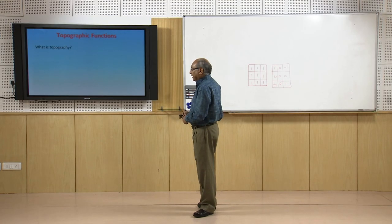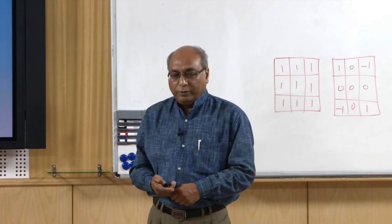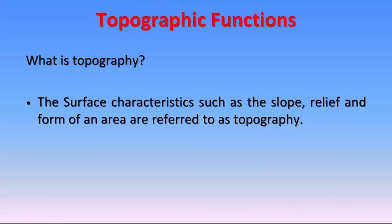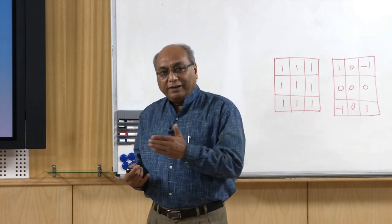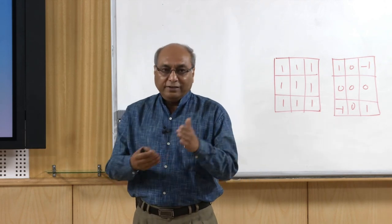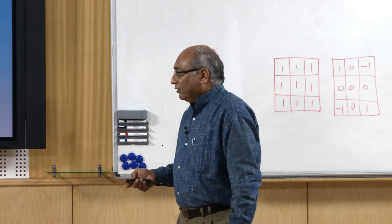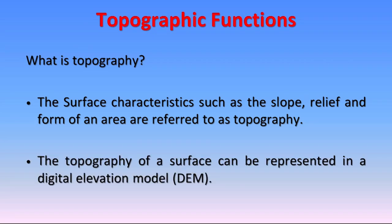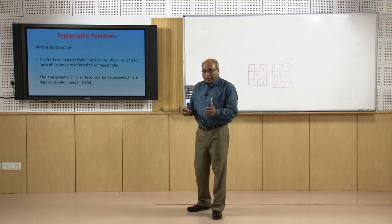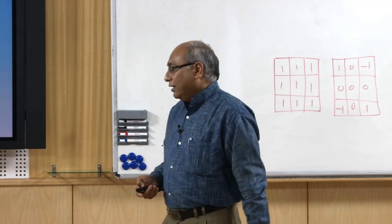Now, topographic functions. Before that, we need to understand topography: it refers to the surface characteristics of a terrain including slope, relief, and form of an area. A completely flat area has flat topography; an area with many undulations, valleys, hills, and ridges has rugged topography. Topography can be represented easily in a digital elevation model. What DEMs are, what types are available, and how to evaluate DEM quality were discussed in previous lectures.